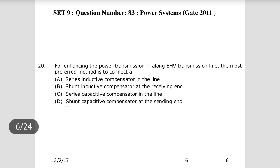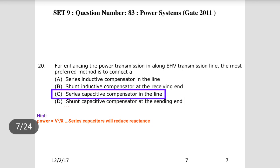Third question: for enhancing power transmission in a long EHV transmission line, the most preferred method is to connect a series capacitor to compensate the line. Power transfer P = V²/X. To increase power transfer for the same voltage, the reactance X must be reduced. By connecting a series capacitor, the net reactance is reduced, allowing more power to be transferred at the same voltage level.